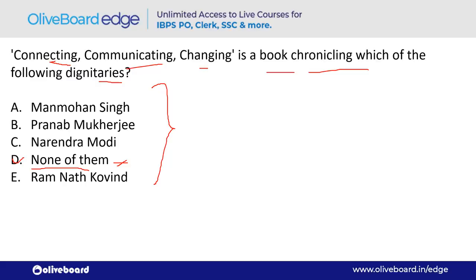Ramnath Kovind is the 14th President of India. Vice President Venkaiah Naidu has a book titled 'Connecting, Communicating, Changing.'